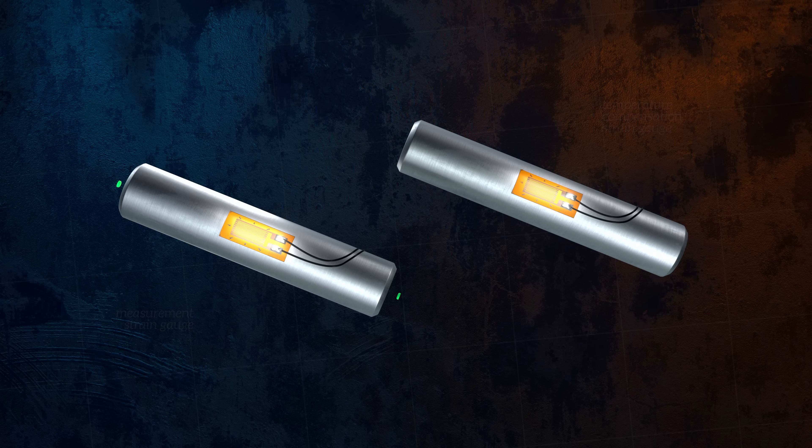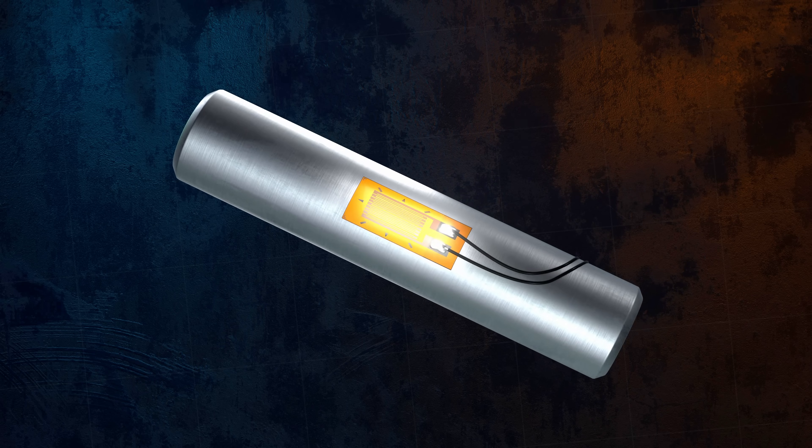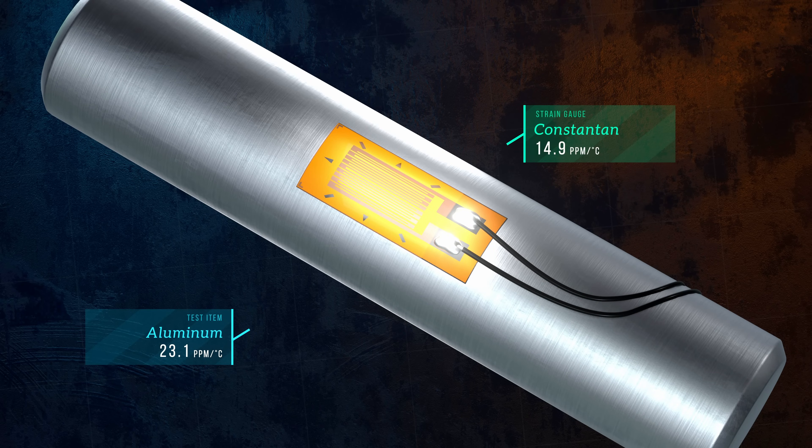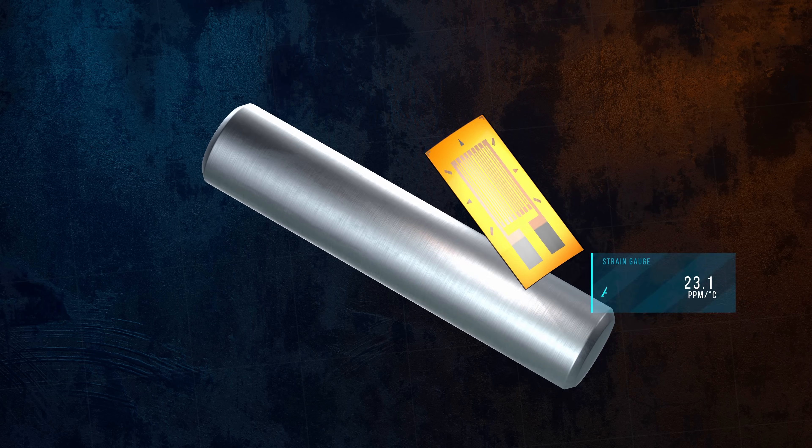A simpler approach is self-compensation, where the strain gauge material is selected to have a CTE similar to that of the test item material. Manufacturers make slight adjustments to the composition of the constantin alloy, so that they can supply strain gauges with different CTEs. And all you need to do is select the strain gauge with a CTE that matches the test item.